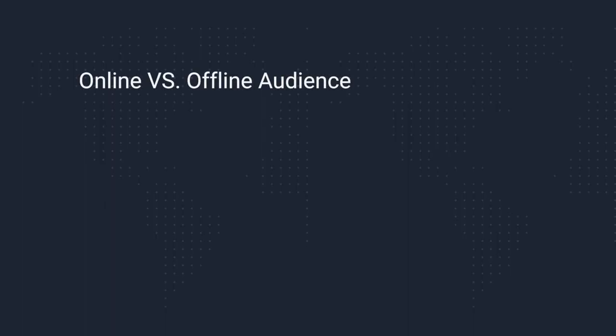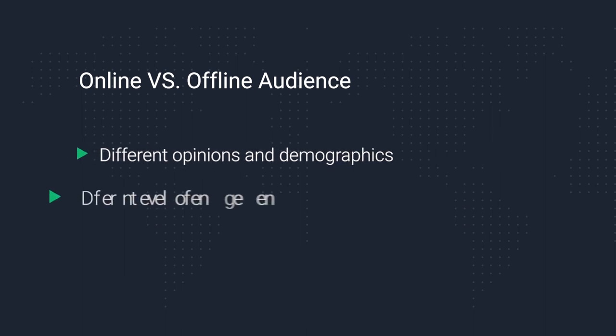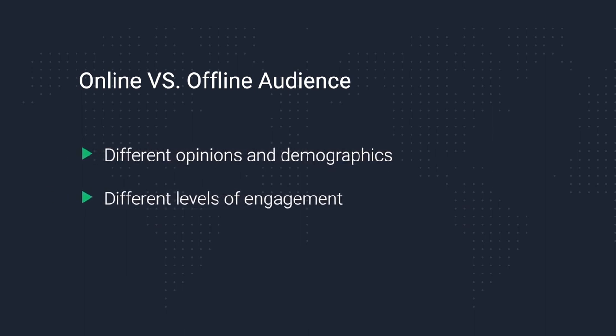This doesn't mean that media monitoring data will always be more accurate than offline data, but it does speak to some basic differences between your online and offline audience. There are two main types of differences to consider. The first difference is a standard difference in opinion — different audiences can have different preferences, especially if they don't represent the same demographics. The second type of difference is in their levels of engagement.